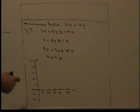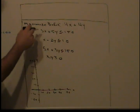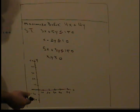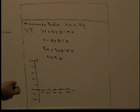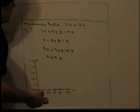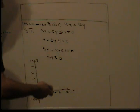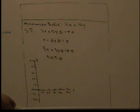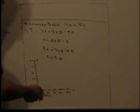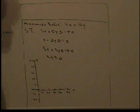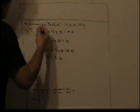Our first step to any linear programming problem is to find the x and y intercepts for each of the constraints. We're going to use a method called the corner point method. We could find slope and y-intercept to graph, but using x and y intercepts lets us find the corner points much easier.